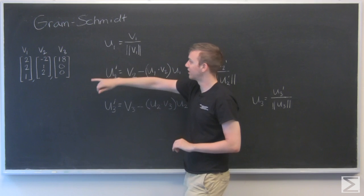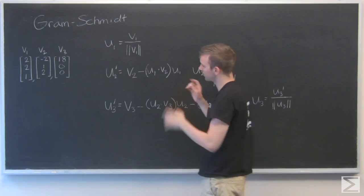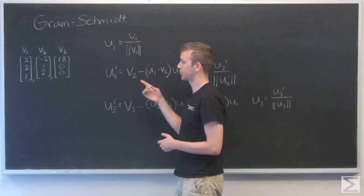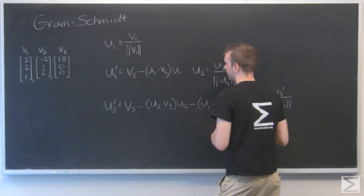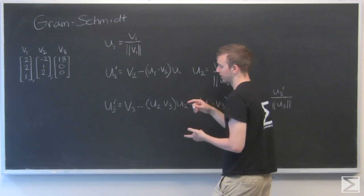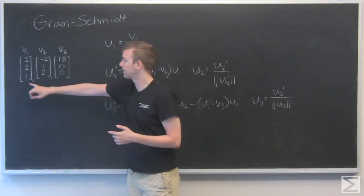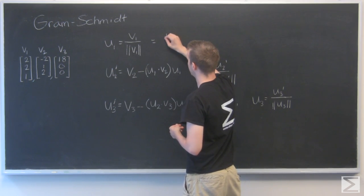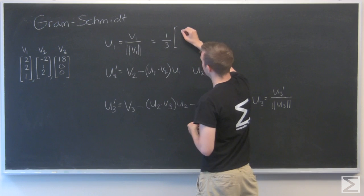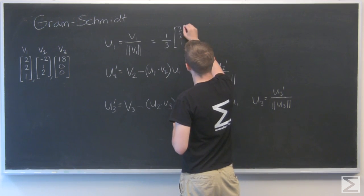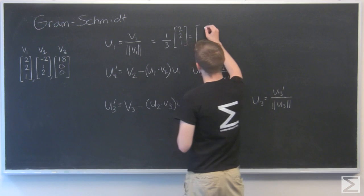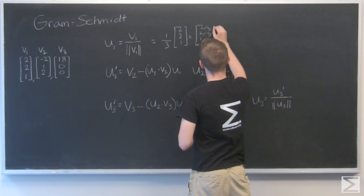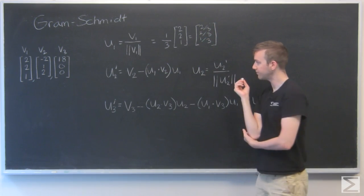So we'll start with this step and V1. So the length of V1, here we have 2, 2, and 1. So the length of that is going to be 2 squared plus 2 squared plus 1 squared. That's 4 plus 4 plus 1. That's 9. And then the square root of that is 3. The length of this is 3. So my U1 is going to be 1 over 3 times my V1. And that's 2 thirds, 2 thirds, 1 third. Cool.